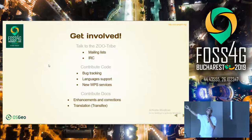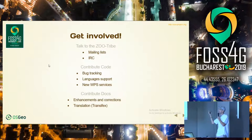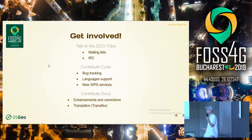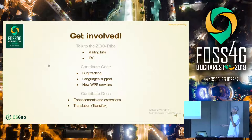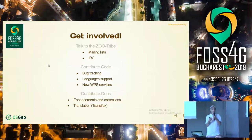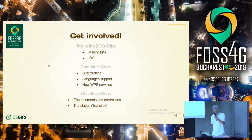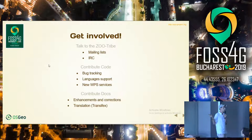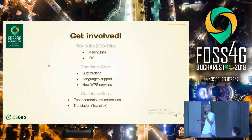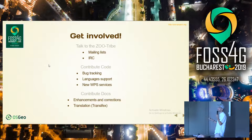As it is an open source project you can contribute yourself: join the mailing list, have direct contact with us on IRC, or do bug tracking. You can also add language support inside the ZOO kernel or for ZOO services, provide new WPS services, or contribute documentation — we are not very good at publicity or documentation. You can also simply provide translations using Transifex, which means you don't need to ask anyone; just connect to Transifex and translate the internal messages of the ZOO kernel or services.